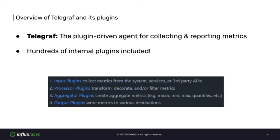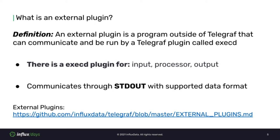What I'll be talking about today are external plugins. External plugins for Telegraph can be described as a program that lives outside of the Telegraph project, but is able to communicate with and be managed by Telegraph through an internal plugin called ExecD. There's an ExecD plugin for each type — input, processor, and output — which allows you to make an external plugin for any part of the Telegraph processing workflow. The ExecD plugin communicates with an external program through standard out and can read any of the supported data formats Telegraph is able to parse, such as Influx line protocol, JSON, and more.